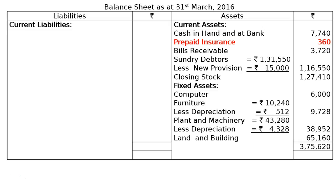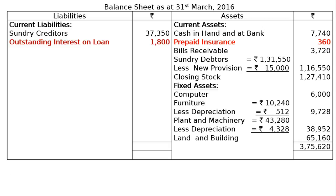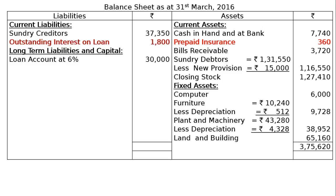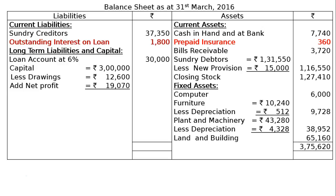On the liability side, current liabilities: sundry creditors Rs. 37,350; outstanding interest on loan Rs. 1,800, shown as a current liability having been charged in the P&L account debit side. Long-term liabilities: loan account at 6% Rs. 30,000. Capital: Rs. 3,00,000 less drawings Rs. 12,600, add net profit Rs. 19,070 as per this year's profit and loss account. The total of the liability side is Rs. 3,75,620. This is the final answer.